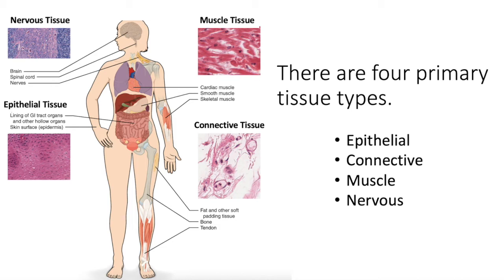Connective tissue supports the body and binds its organs. It provides cushion in the form of fat tissue, resistance to pulling forces in your tendons and ligaments, and a framework for your skin in your dermis. Bone is connective tissue, blood is connective tissue, all cartilage is connective tissue. It's a really broad category — that'll be the second tissue type we explore in this module.